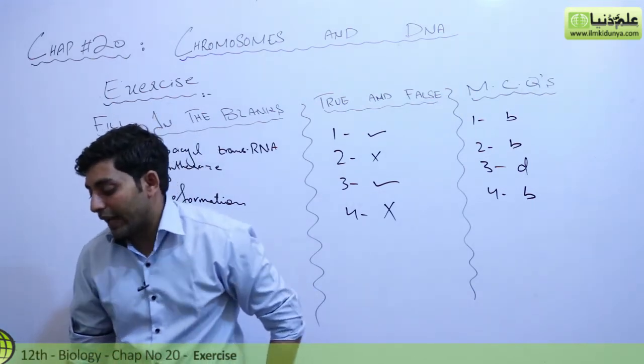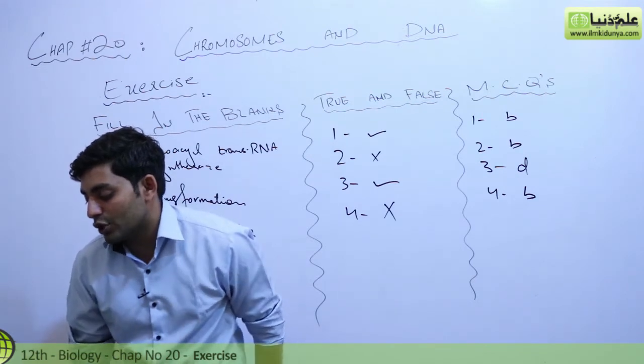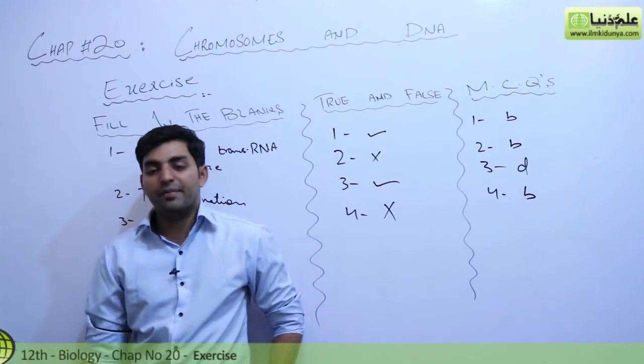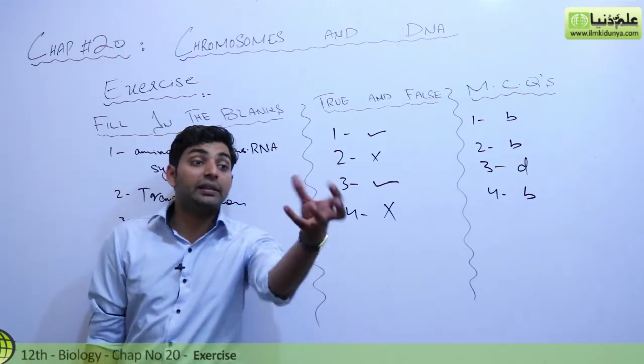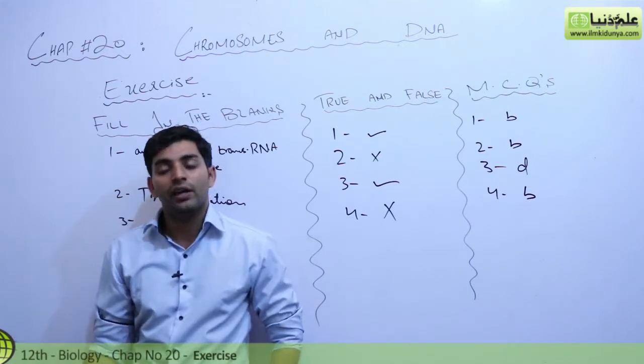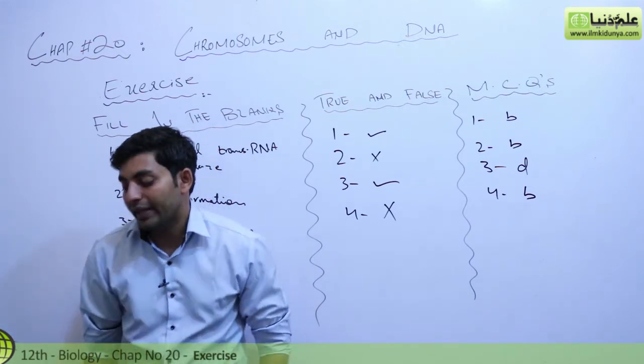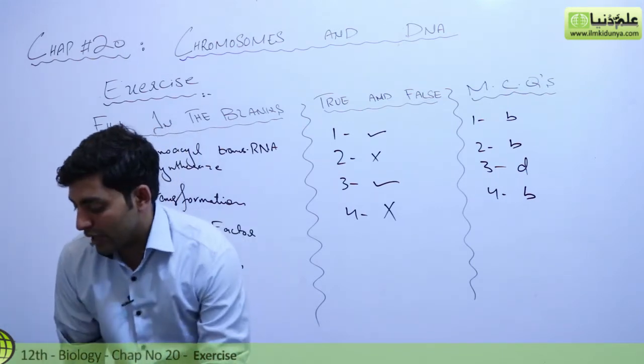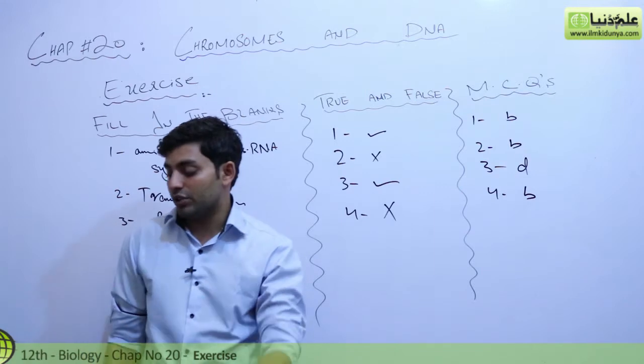How did Crick and his colleagues determine how many nucleotides are used to specify each amino acid? Crick and Watson performed experiments and ultimately determined how many nucleotides are used to specify each amino acid. We have to remember the codon.